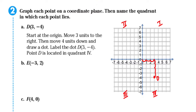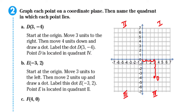Let's take a look at letter B: negative three, two. Start at the origin and move three units to the left because it's negative three. Then two units up because it's positive two. Draw a dot and place the letter E. Label it negative three, two. Point E is located in quadrant two.